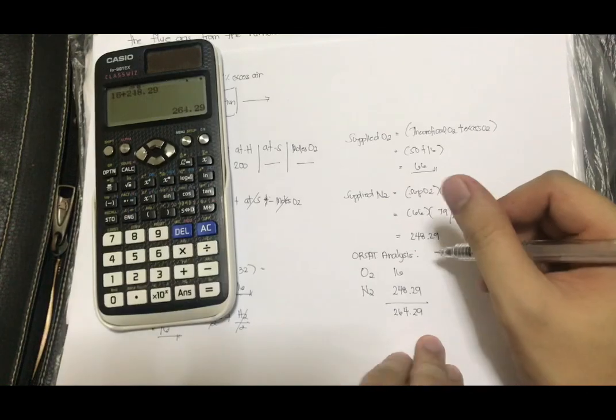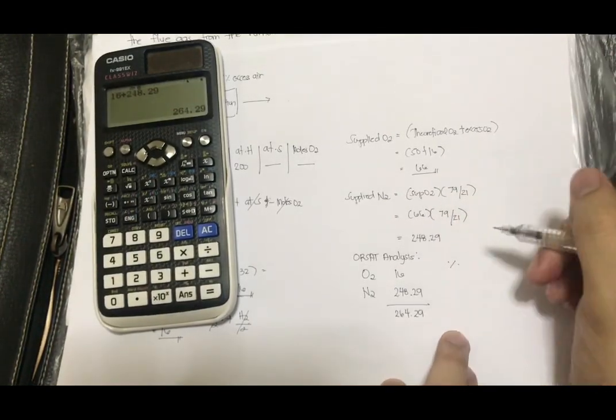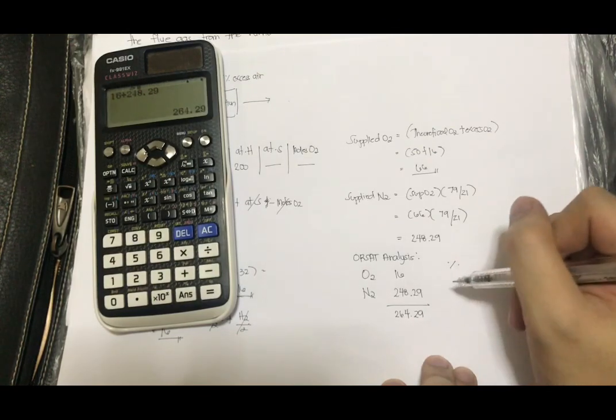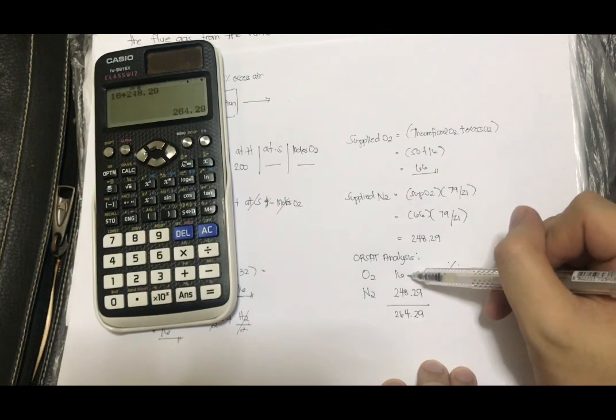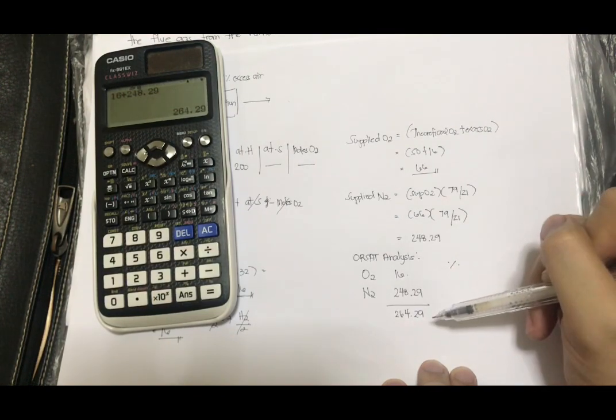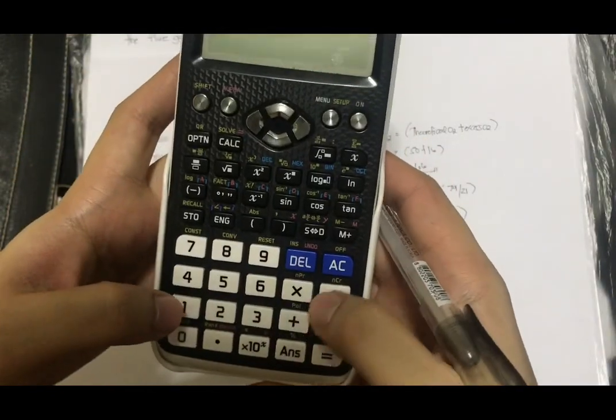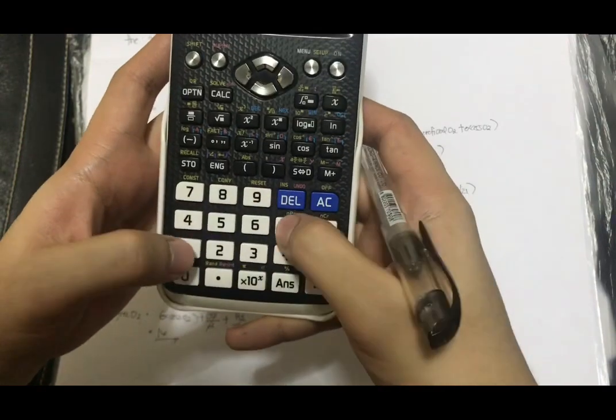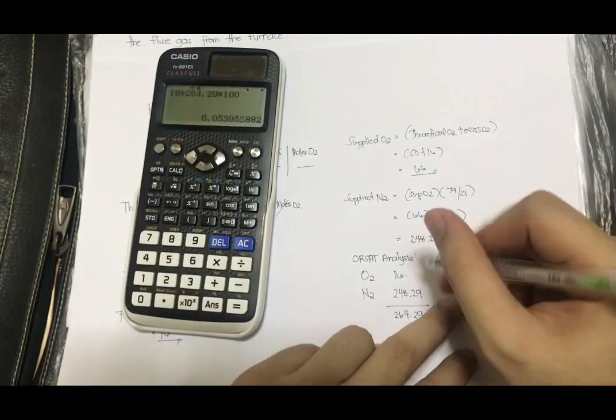The Orsat analysis should have a percentage. So to get the percentage of these two, we need to divide them by their total and multiply by 100. 16 divided by 264.29 times 100. The answer is 6.05%.